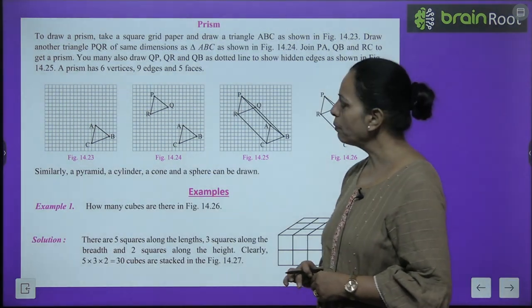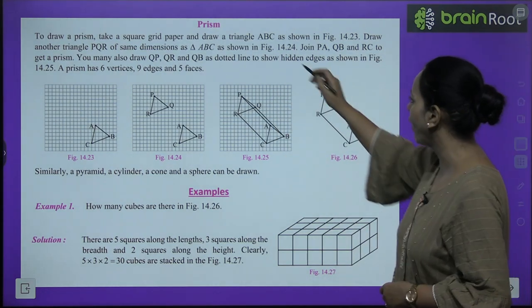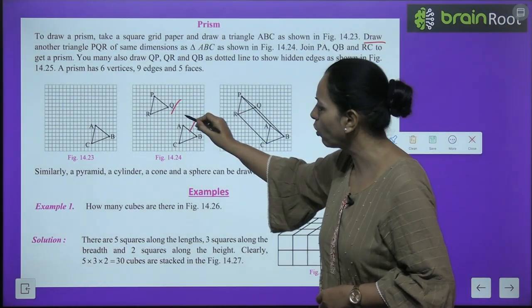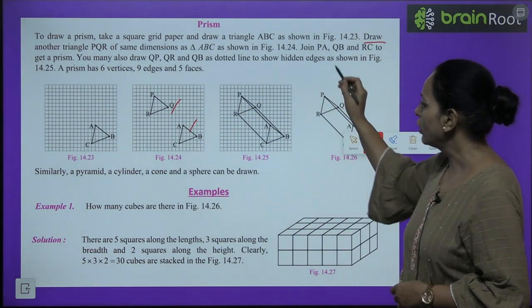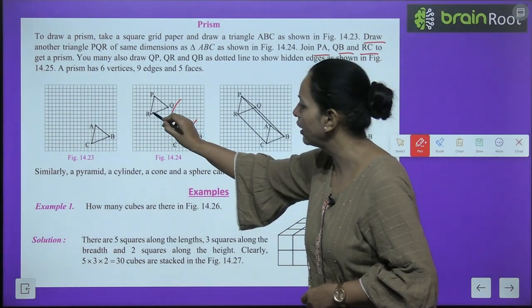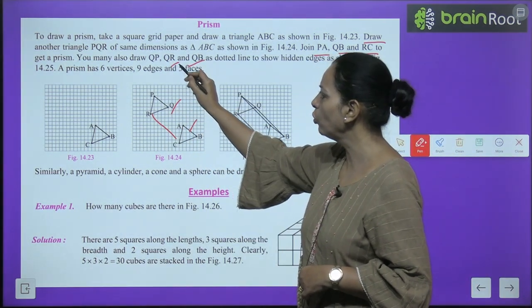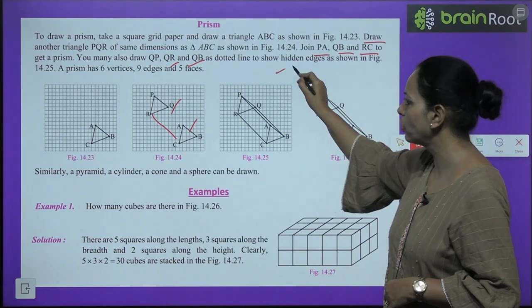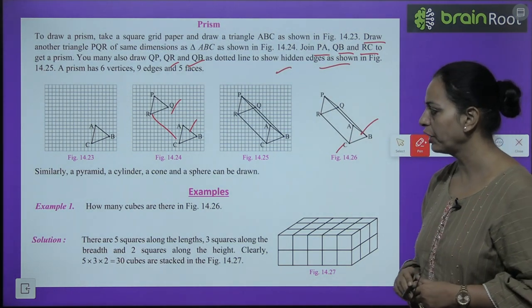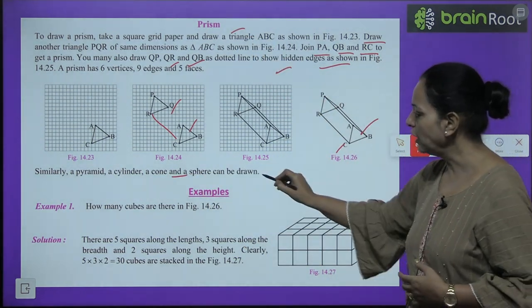Prism: To draw a prism, take a square grid paper and draw a triangle ABC. Then draw another triangle of the same dimension, PQR. Then join PA, QB, and RC to get a prism. You may also draw QP, QR, and QB as dotted lines because these are the hidden edges. So you will get a prism. Similarly, we can draw many shapes.